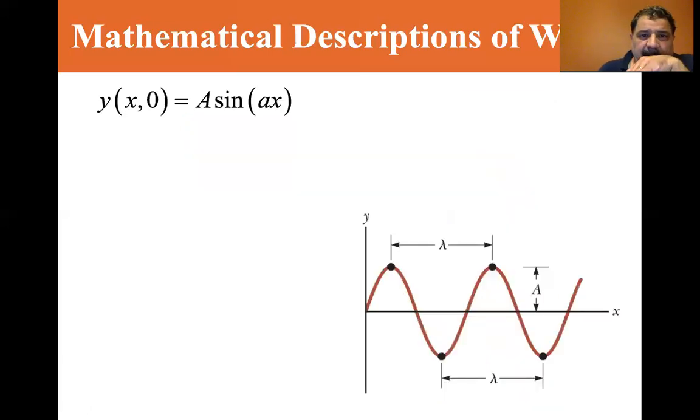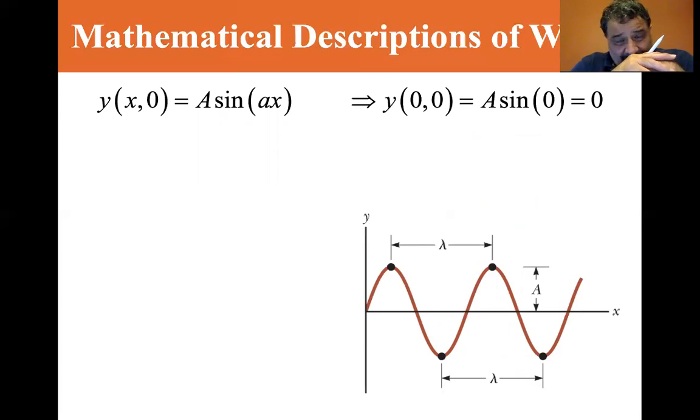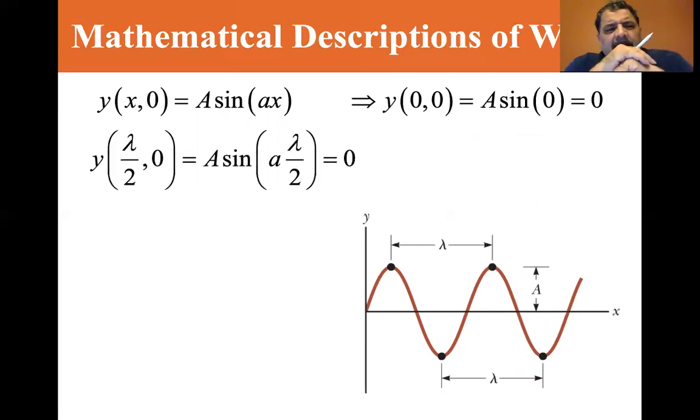So the function is y(x,0) is equal to a sine of small a times x and the small a is going to be determined. It's a constant that's going to be determined. So y of zero comma zero is equal to a sine of zero, it equals zero. Now y of lambda over two, zero is equal to a sine a lambda over two equals zero. Now lambda over two is just the half wavelength. And so it's gone up and it's gone down. That's lambda over two. You're back at the zero point. Now, a lambda over two is equal to pi. Now there's two pi in every wavelength. So a of lambda over two is equal to pi. So a is equal to two pi over lambda.